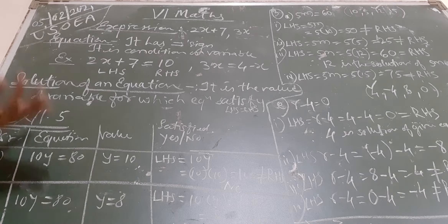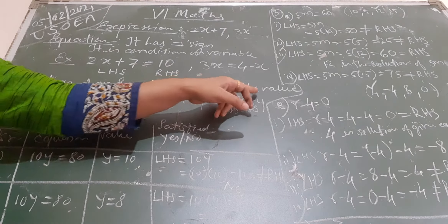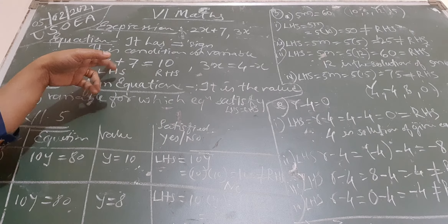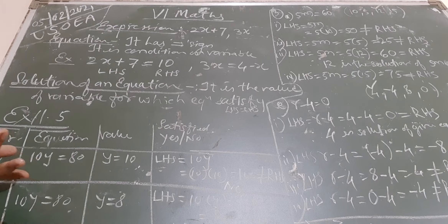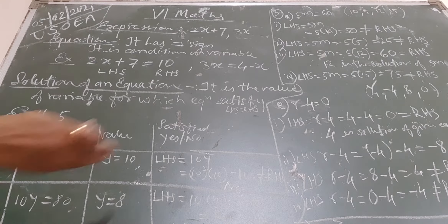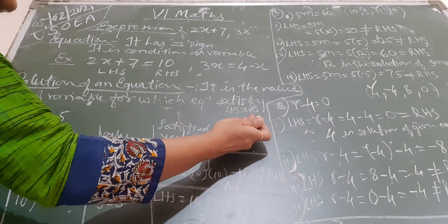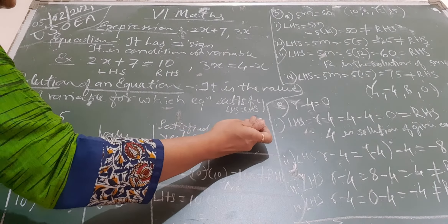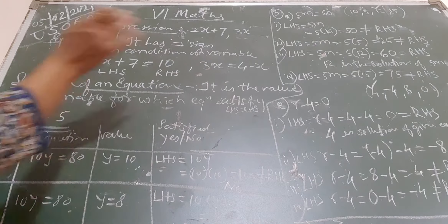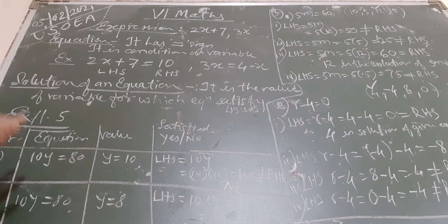What is the solution of an equation? It is the value of the variable for which the equation is satisfied. Equation satisfied means left hand side should be equal to right hand side. If we get left hand side equal to right hand side, that value of the variable is the solution of that equation.